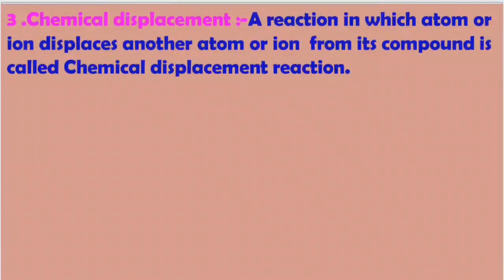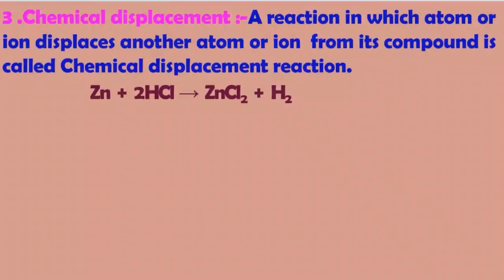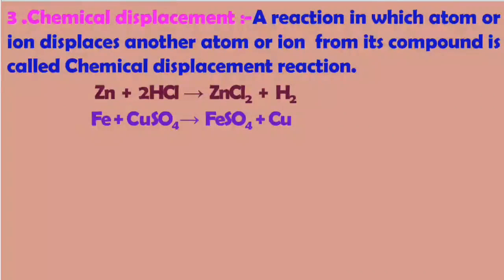The third type is chemical displacement. A reaction in which an atom or ion displaces another atom or ion from its compound is called a chemical displacement reaction. In this reaction, the stronger atom or ion displaces the weaker one. For example, zinc reacts with hydrochloric acid to form zinc chloride and hydrogen gas — zinc, being stronger than hydrogen, displaces hydrogen from hydrogen chloride. Similarly, iron reacts with copper sulfate to form iron sulfate and copper, since iron is a stronger metal than copper.